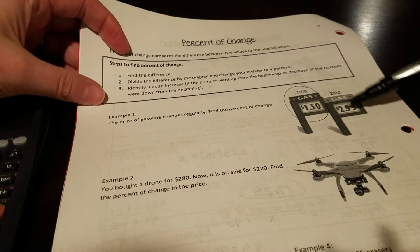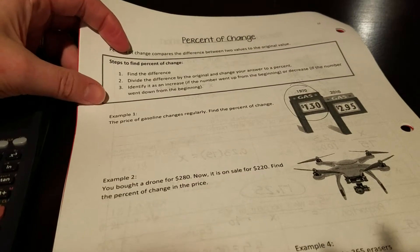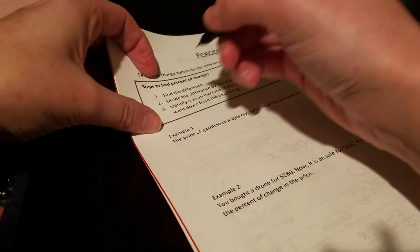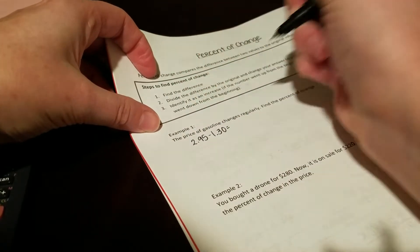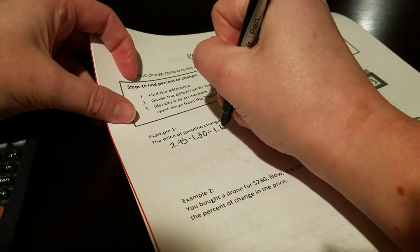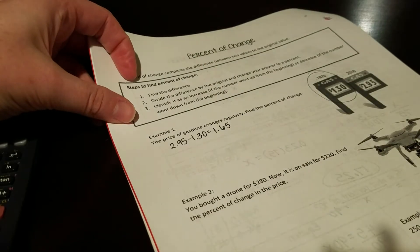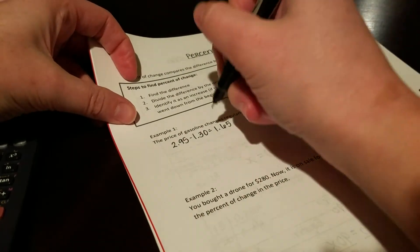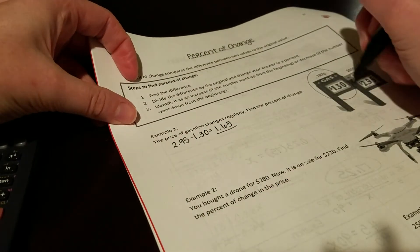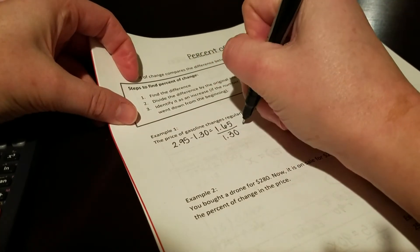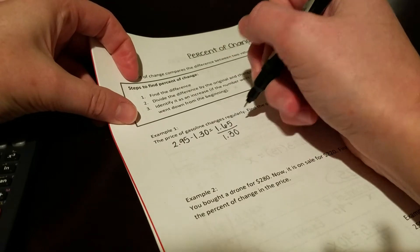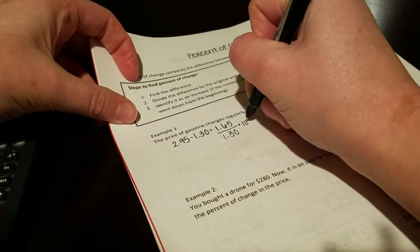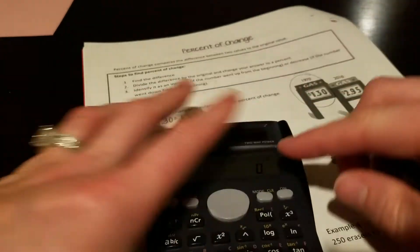Our first step is to find the difference. So we just need to take the larger number and subtract the smaller number from it. So we're going to do 2.95 minus 1.30, which is going to give us 1.65. From there we take that number, we divide by the original, which is why I had to circle it. And in order to change it to a percent, we can either divide these and then change our decimal, or we can go ahead and multiply by 100 when we actually type this in.